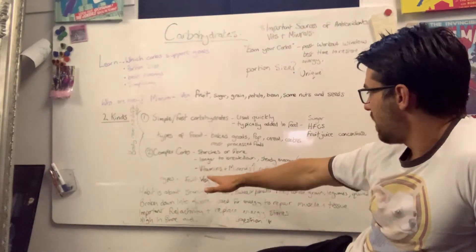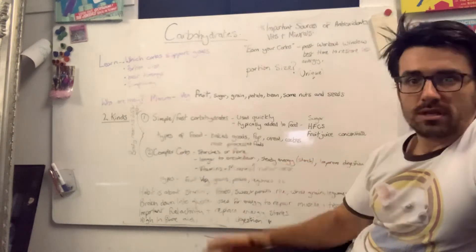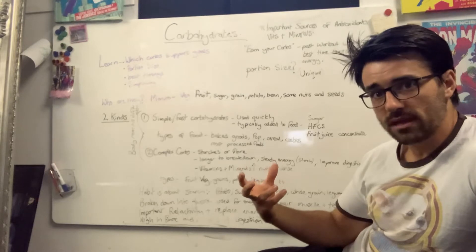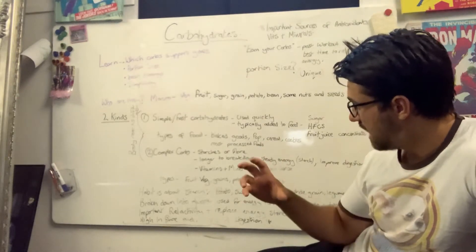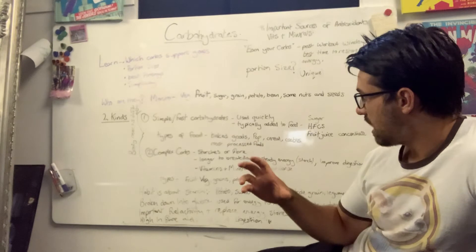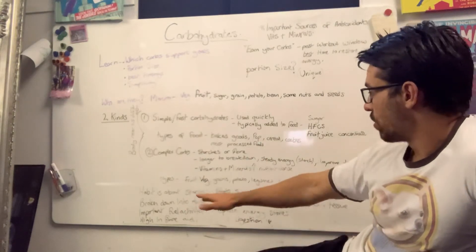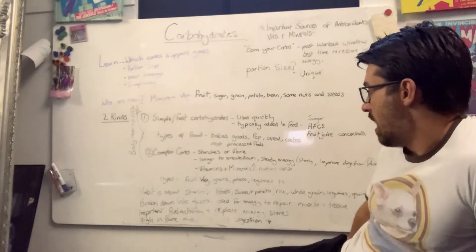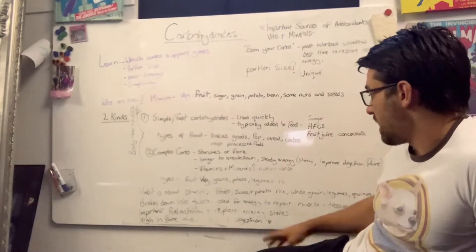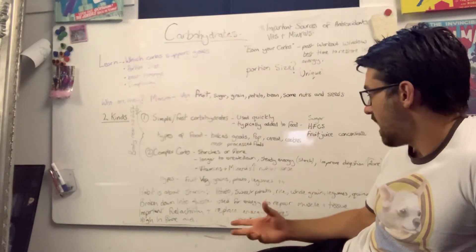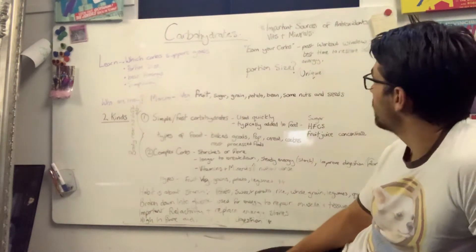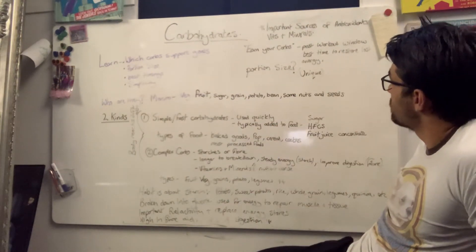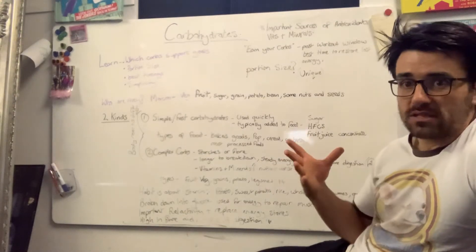Looking at your fruits and your vegetables, we're going to save that. That's another habit in itself. We are going to focus purely on these starchy carbohydrates. Starchy carbohydrates are basically broken down into glucose and used for energy to repair muscles and tissues. They're an important fuel for activity and to replace energy stores, and they're high in fiber, which helps aid in digestion. They're important sources of antioxidants, vitamins, and minerals.